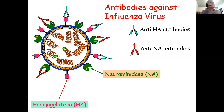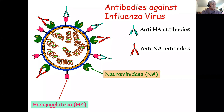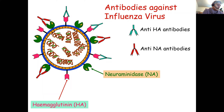Cells called macrophages can use the antibodies in order to engulf the virus, bind to it, and destroy it inside the macrophage. We can make antibodies in two different ways: infection or vaccination.